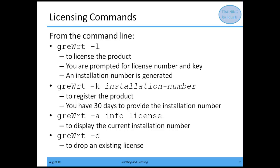As far as licensing the product, if you're on a Windows system you can go from the Start menu and find the licensor to add any licensing you need. From the command line, you do GREWRT -L, which prompts you for the license number and key and gives you an installation number. Once you have that installation number, you can use GREWRT -K to register the product — you have 30 days to provide it. To find out information about your license, do GREWRT -A info license. To drop an existing license, use the -D option.